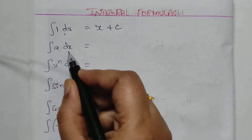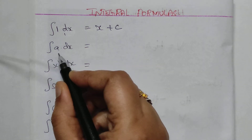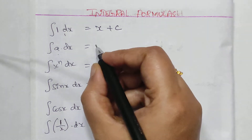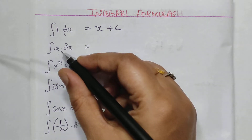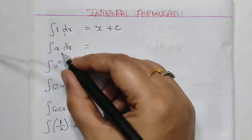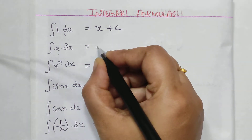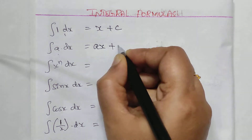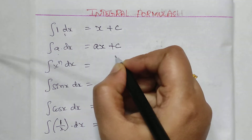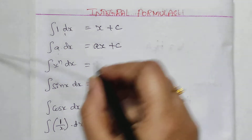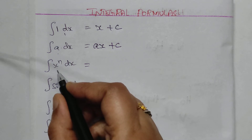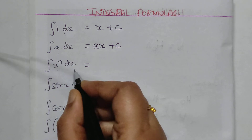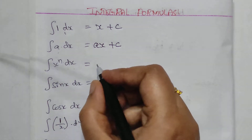The next is the integral of a dx, where we have a constant value a. By integrating the value a, we get a into x plus a constant C.